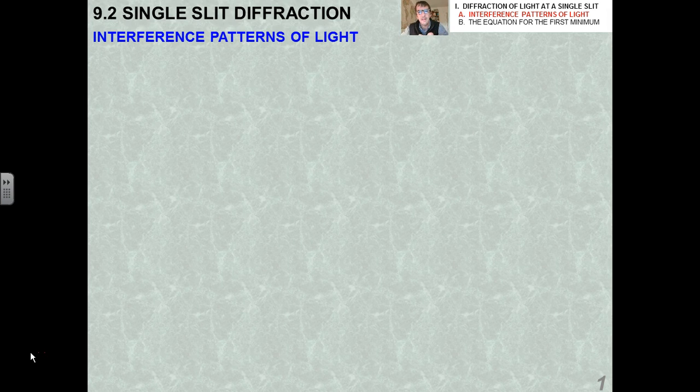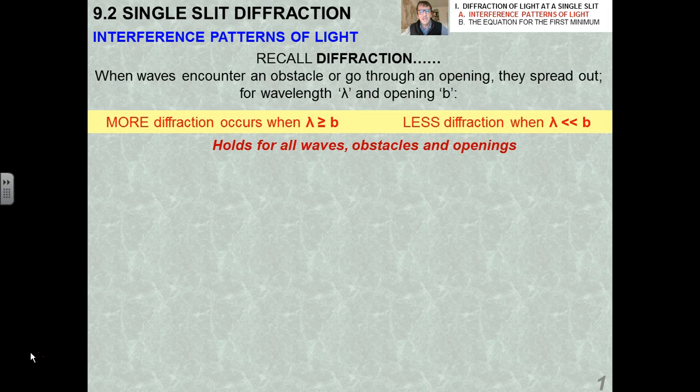We talked about the three variables being important in single-slit diffraction. Number one, the wavelength of the light. Number two, the width-opening little b. And number three, the angle of that, the angular width of that fringe on the screen. So we're going to revisit those, and I'm going to actually quantify and come up with an equation for you. Fortunately for you, the mathematics is quite simple.